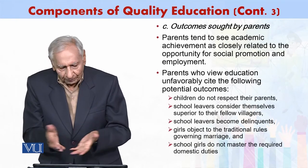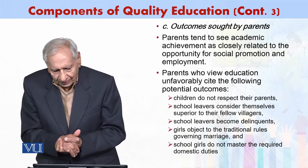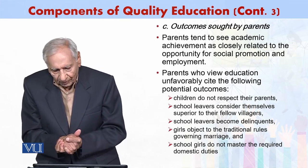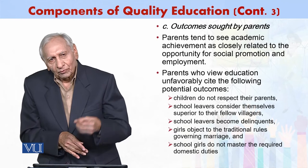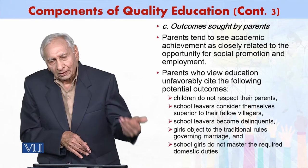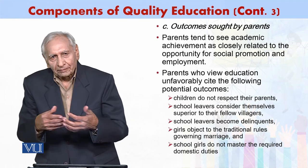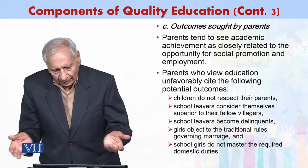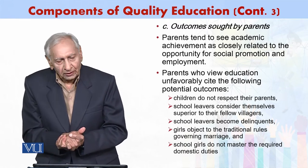Outcomes sought by parents include academic achievement, which is closely related to opportunities for social promotion and employment — having a job, being able to set up one's own work. Parents also consider what kind of person the child becomes in society.